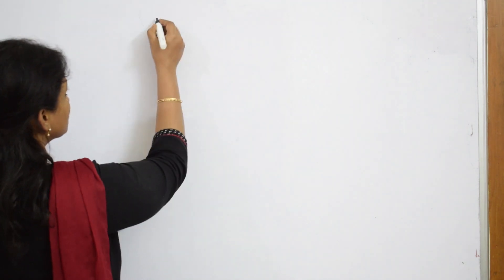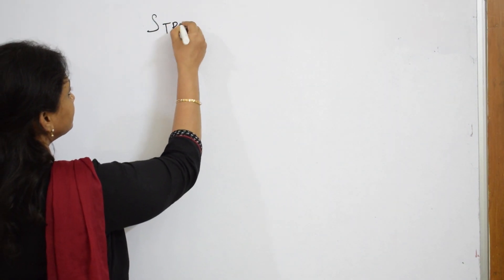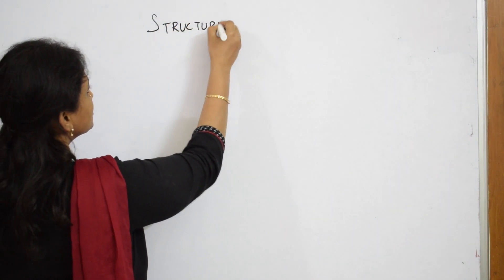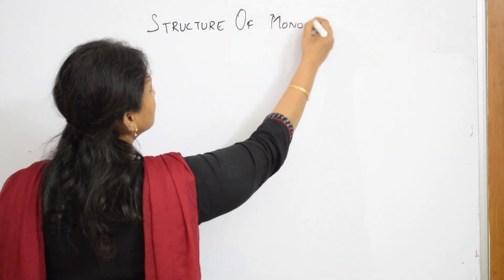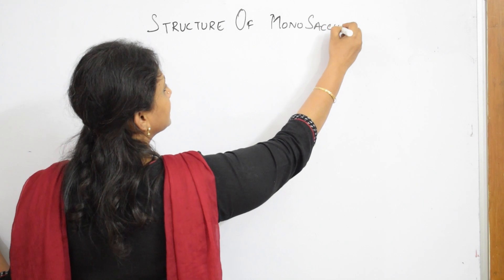Let us come back. Now, gradually from the preparation, let us learn the structures of your monosaccharides. Gradually preparation done, we will go to the structures: open chain structure, Fischer projection that is your cyclic structures, Haworth structures. Let us write the heading structure of monosaccharides.